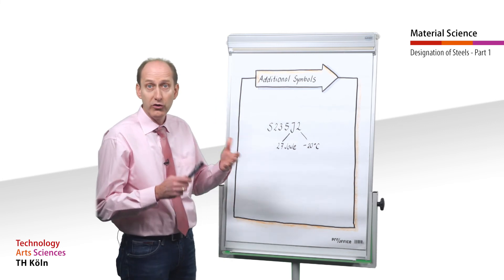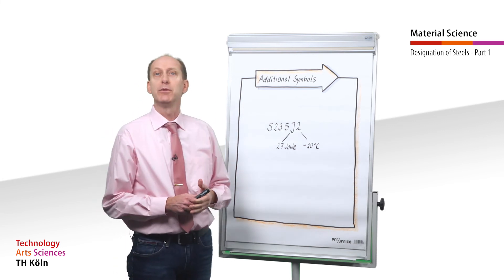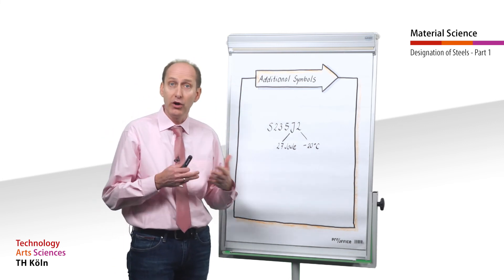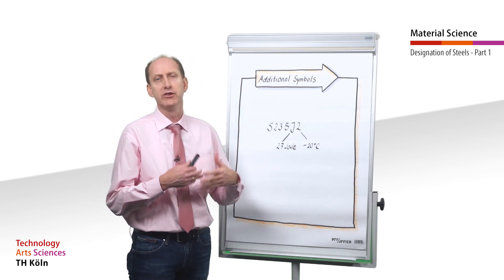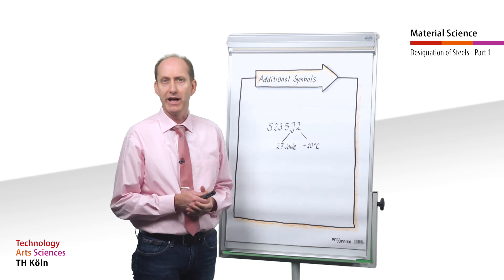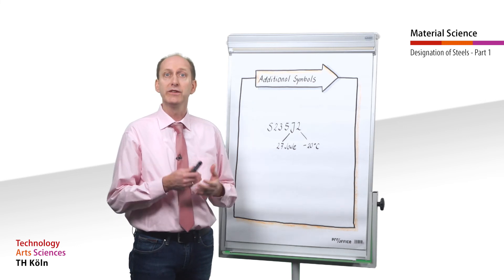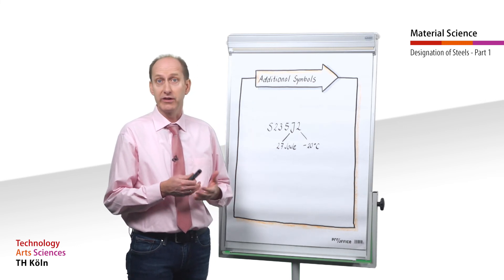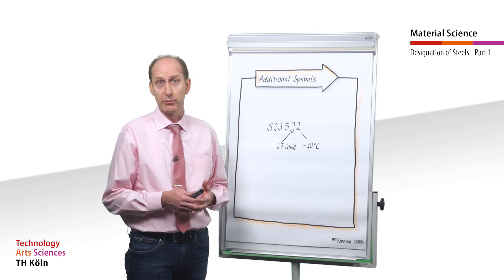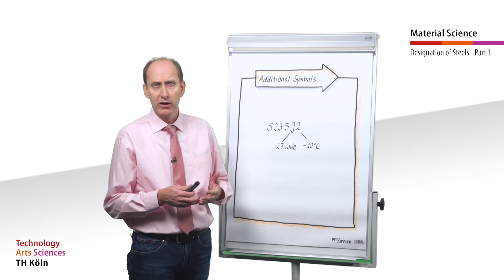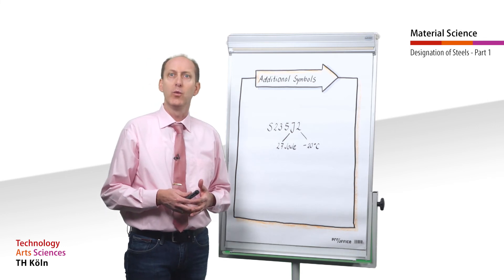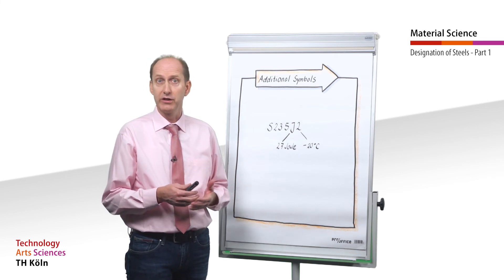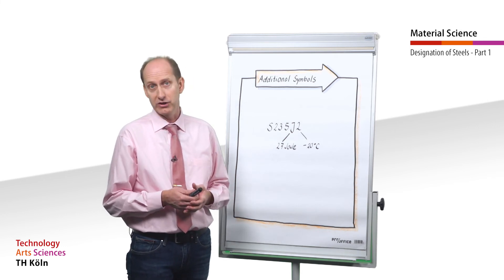Accordingly, S 235 J2 designates a structural steel with a minimum yield strength of 235 MPa and a minimum notch bar impact work of 27 J at minus 20 degrees Celsius. Even though you may not be able to fully understand the meaning of all the symbols and additional symbols right now, we will discuss the subject of steel designations comprehensively so that we can work with the designations of materials in the following chapters.